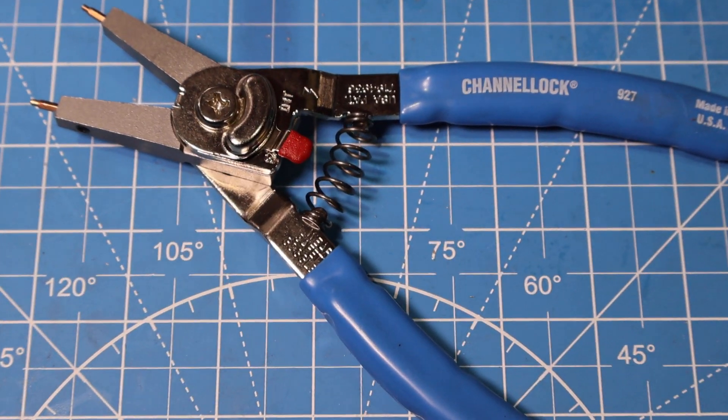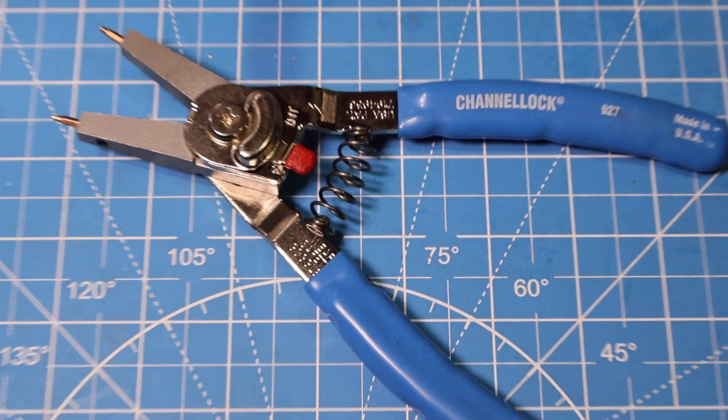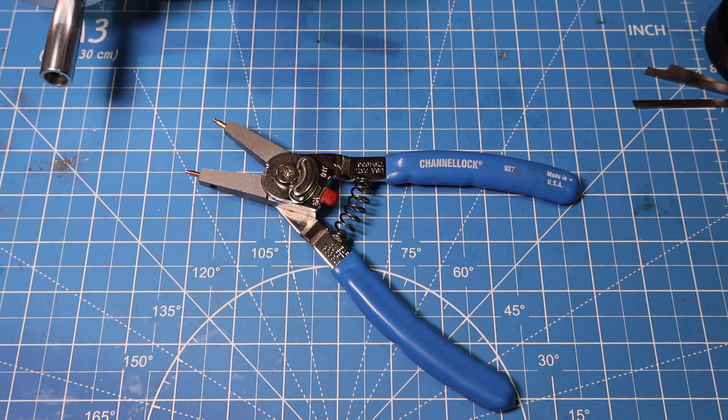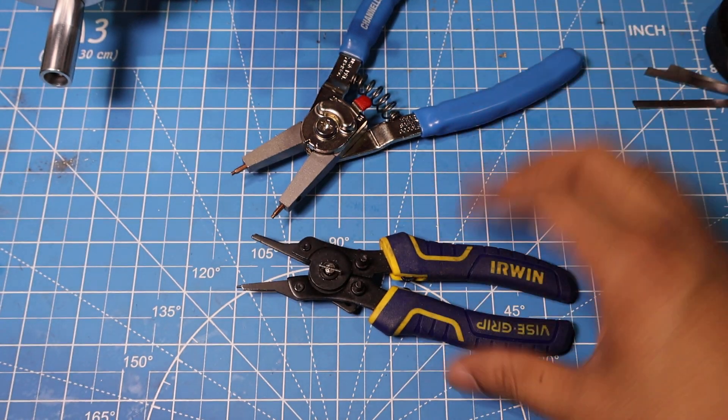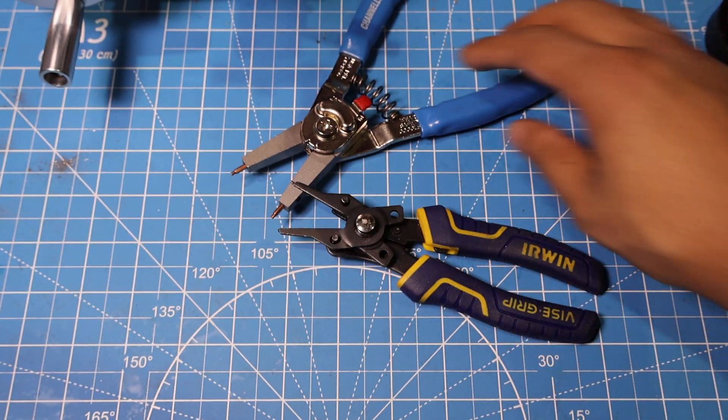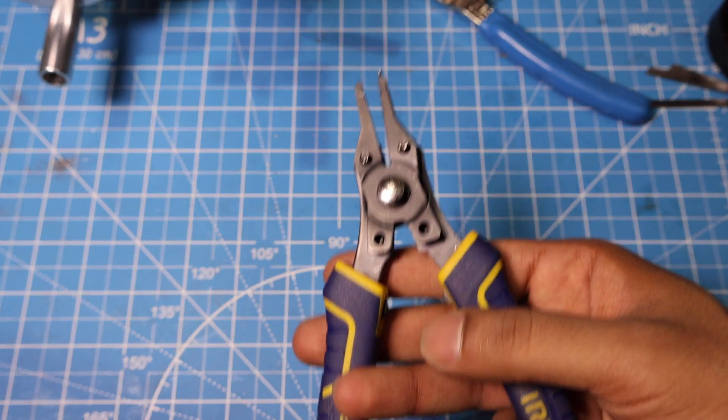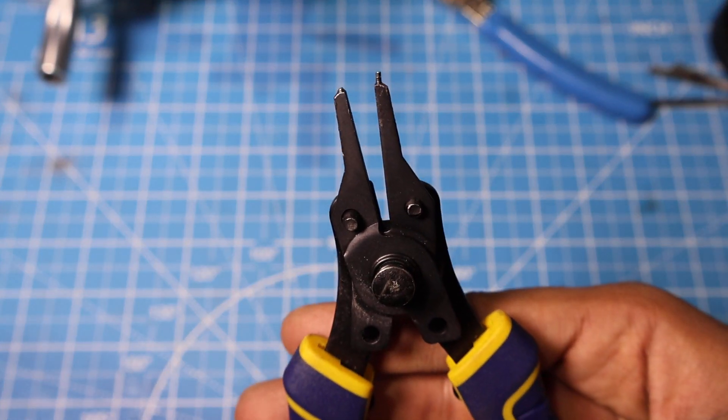So the reason I got these pliers is because I had some snap ring pliers before and they failed me. It's not really their fault, it's really my fault. These are smaller snap ring pliers as you can see.